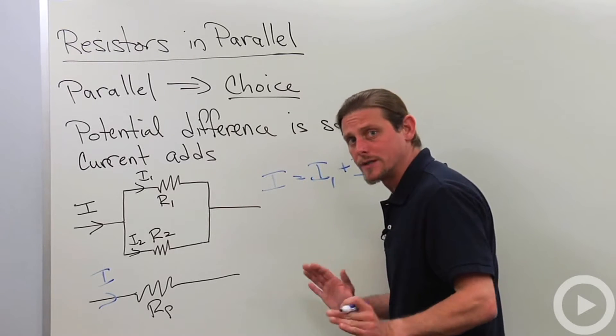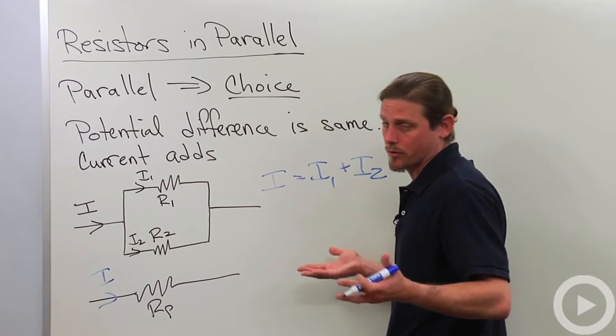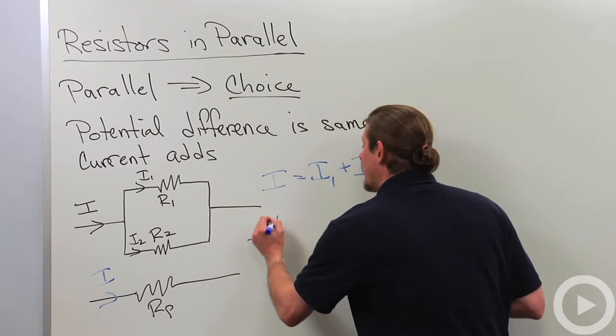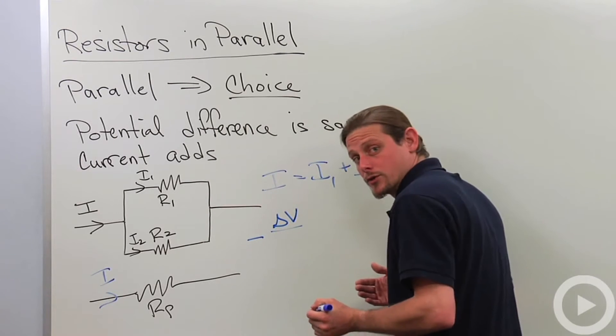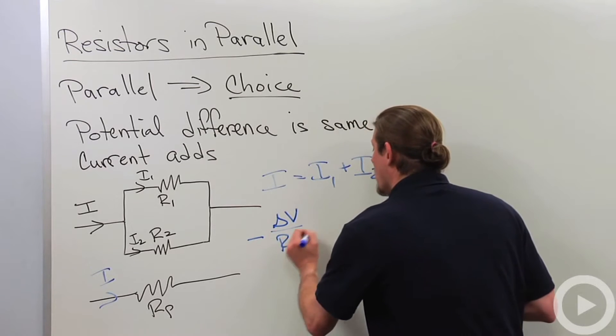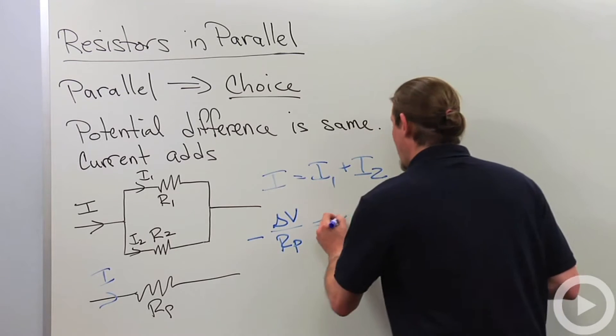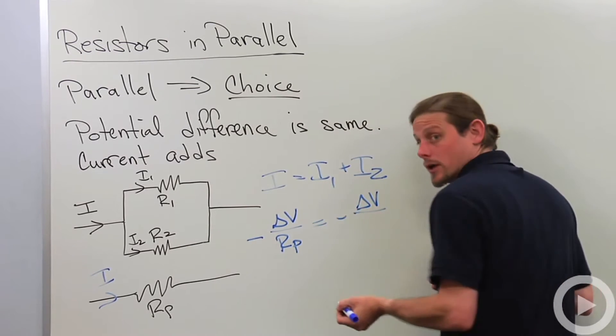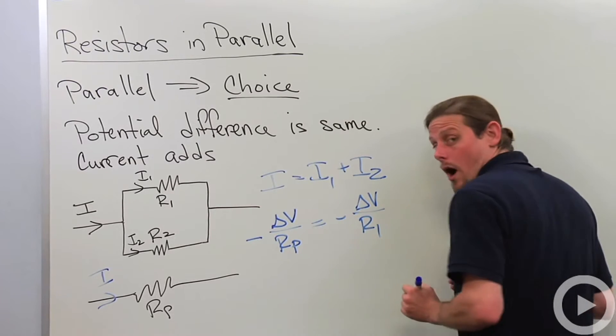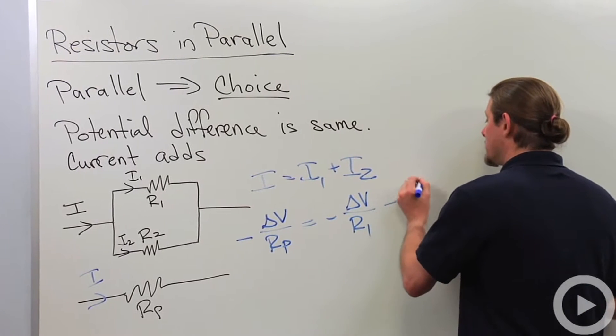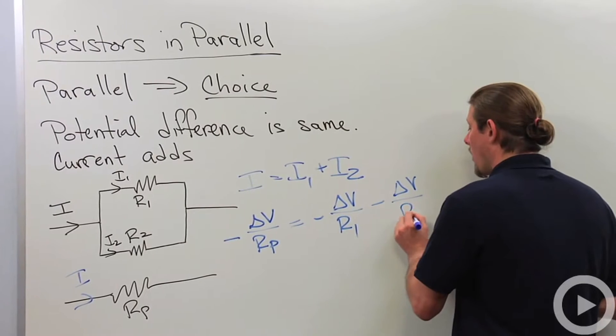the potential difference divided by the resistance with, of course, our obligatory minus sign. So it'll be minus potential difference over R parallel equals minus potential difference over R1 minus potential difference over R2.